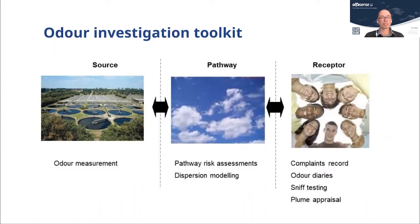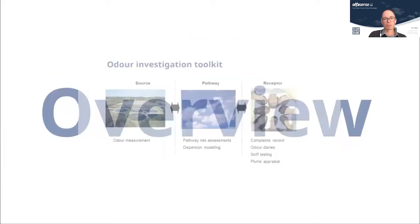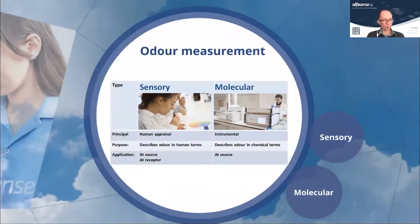There are a number of tools that can be applied at each stage. At the source, the key tool is measuring the odours — their character, nature, and related properties. For the pathway, there are two categories: fairly simplistic qualitative risk assessments, and much more detailed atmospheric dispersion modelling. At the receptor, we can use odour complaints records as a passive tool, and more active tools such as odour diaries, sniff testing appraisals, and more detailed plume appraisals.